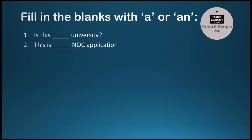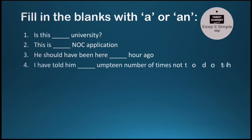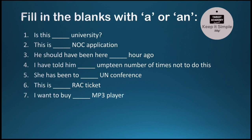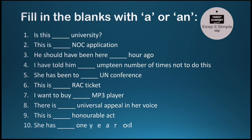The exercise: Is this ___ University? This is ___ NOC application. He should have been here ___ hour ago. I have told him ___ umpteen number of times not to do this. She has been to ___ UN conference. This is ___ RAC ticket. I want to buy ___ MP3 player. There is ___ universal appeal in her voice. This is ___ honorable act. She has ___ one year old. I hope you've written down your answers.